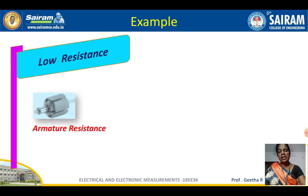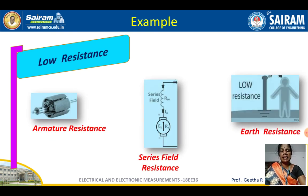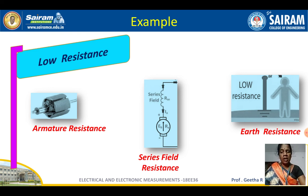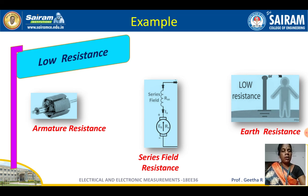Under low resistance, examples include armature winding resistance — that is below 1 ohm. Series field winding resistance also comes under low resistance. Earth resistance, electrode resistance, and earth rod resistance are all below 1 ohm and fall under the low resistance category.